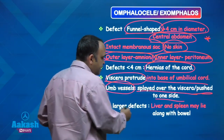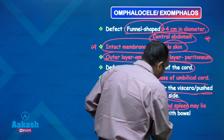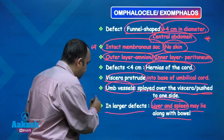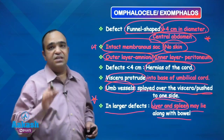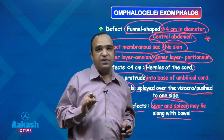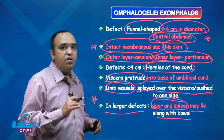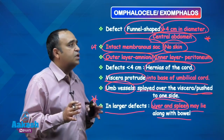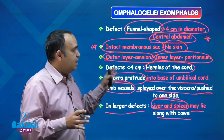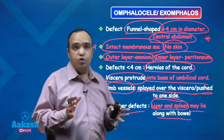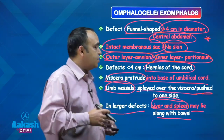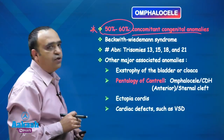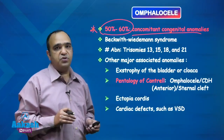In very large omphalocele defects, even the liver and spleen may be herniated — another point of difference with gastroschisis. In gastroschisis the defects are usually small, so you will rarely see liver or spleen herniation; it is mainly the bowel. But in omphalocele the defects are huge, so even liver and viscera may be herniated.